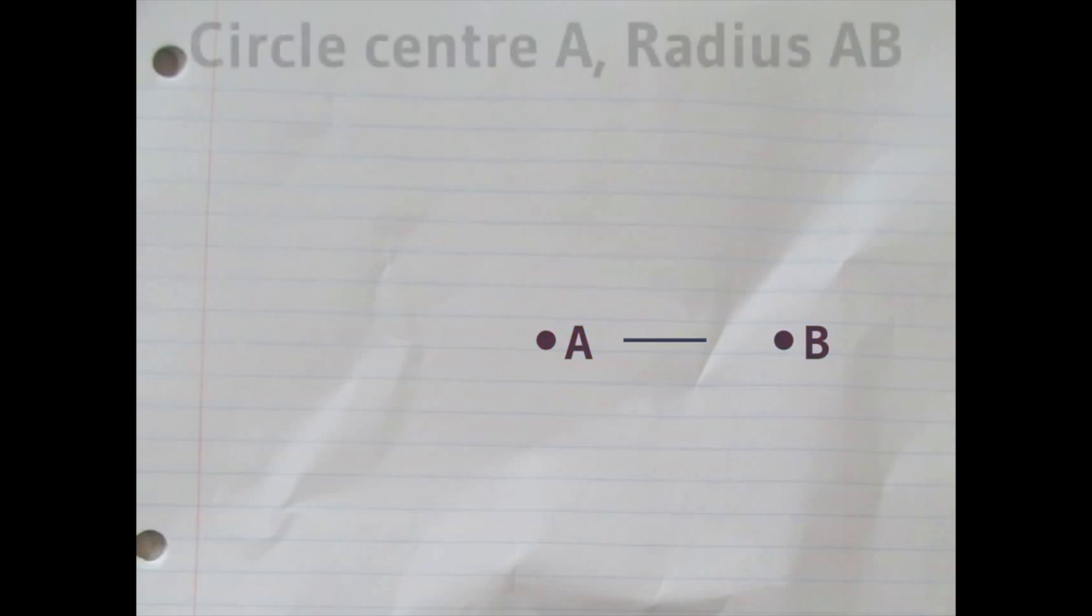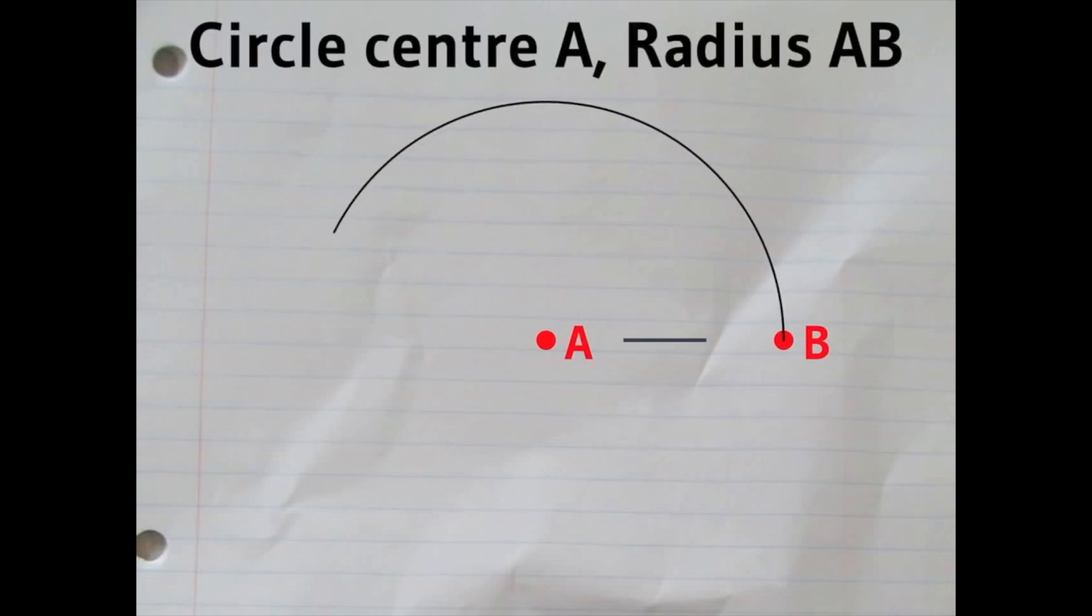The next step is to draw a circle with center A and radius AB. You'll only need those two parts of the circle.